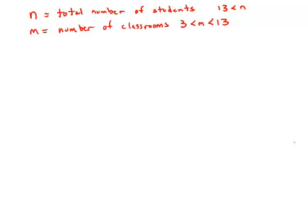A school administrator will assign each student of a group of n students to one of m classrooms. So n is the total number of students and m is the number of classrooms. If 3 is less than n, is less than 13 is less than n, and I've split those up into two different rows so we can see.